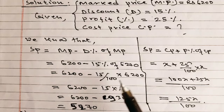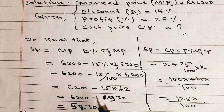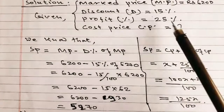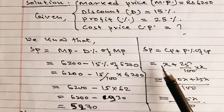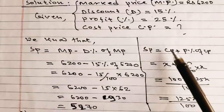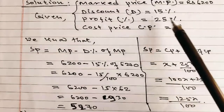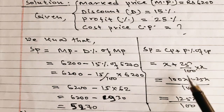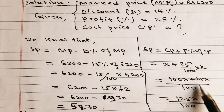SP = 6200 − (15/100 × 6200) = 6200 − 930 = 5270. Now using the profit formula: SP = CP + profit% of CP. Let CP = x. Then SP = x + (25/100)x = (100x + 25x)/100 = 125x/100.